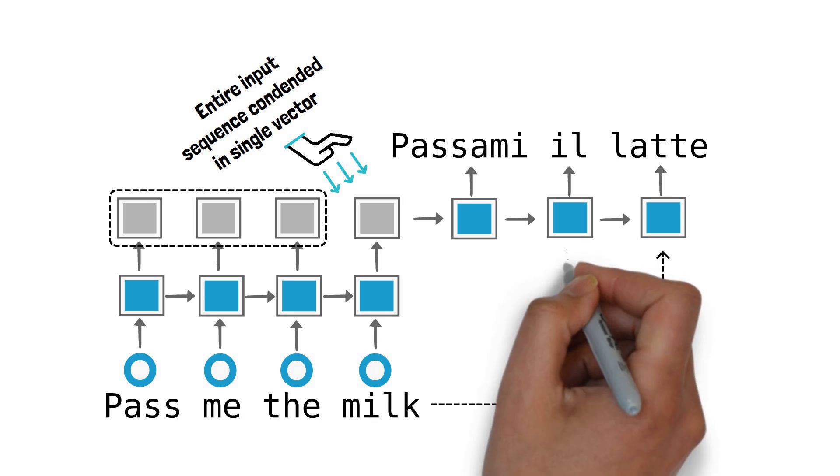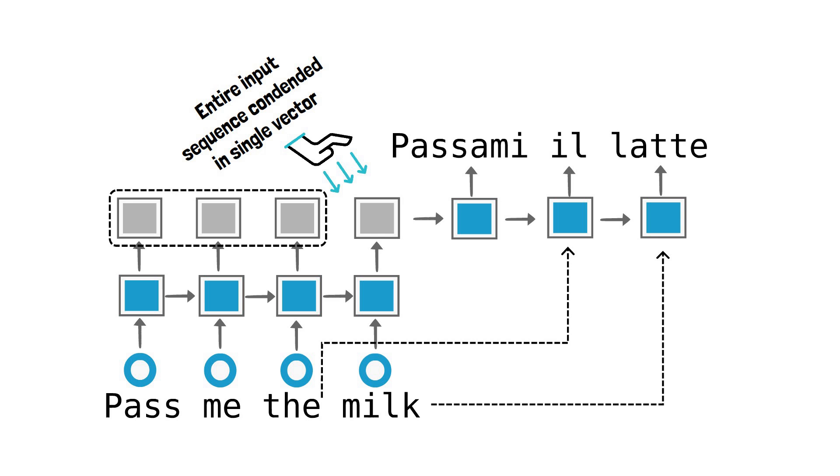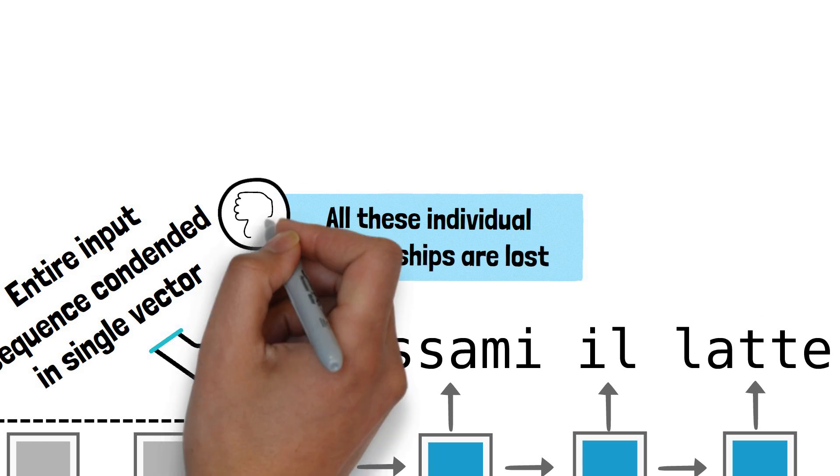Similarly to be able to correctly translate the word the in Italian it's important to consider the word it refers to milk so that the article of the appropriate gender can be chosen. All of this is lost when the only link between the encoder and the decoder is through the final hidden state.